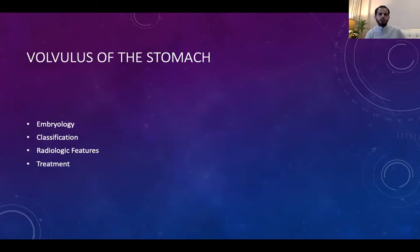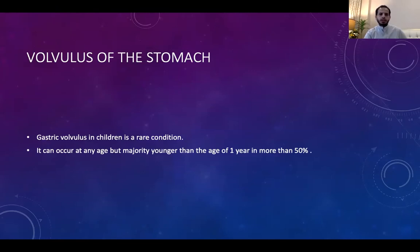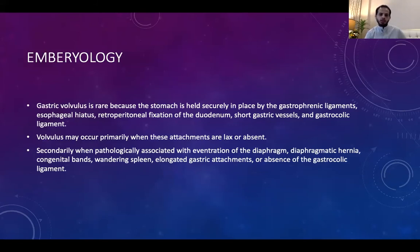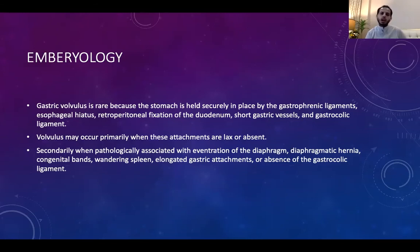Gastric volvulus is a rare condition due to the many attachments of the stomach — gastrophrenic ligaments, esophageal hiatus, retroperitoneal fixation of the duodenum, short gastric vessels, and gastrocolic ligaments. It can occur at any age, but the majority in children is under one year. It can be primary — if the attachments are lax or absent — or secondary, if associated with pathological conditions like diaphragmatic hernia, hiatal hernia, or wandering spleen.